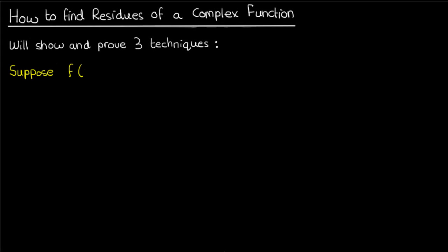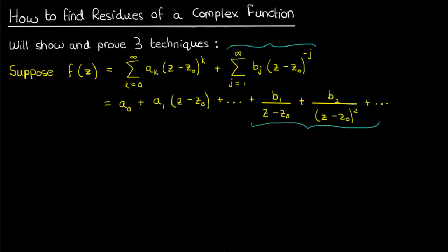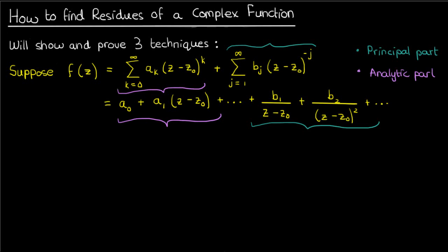Suppose I have a complex function with the following Laurent series. Recall that a Laurent series is essentially a generalized Taylor series that includes rational expressions with negative powers on z — the b series or principal part — in addition to the polynomial portion found in a typical Taylor series, the analytical part or a series. Also recall that the residue of a function f at a point z0 is the coefficient b1 in the Laurent expansion of f around z0 — the coefficient of the 1 over (z minus z0) term.